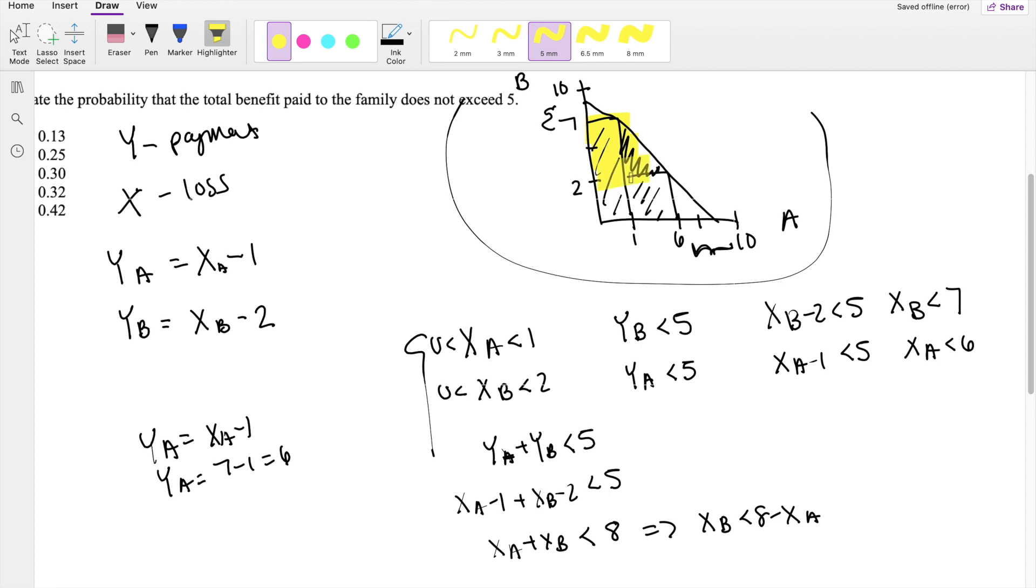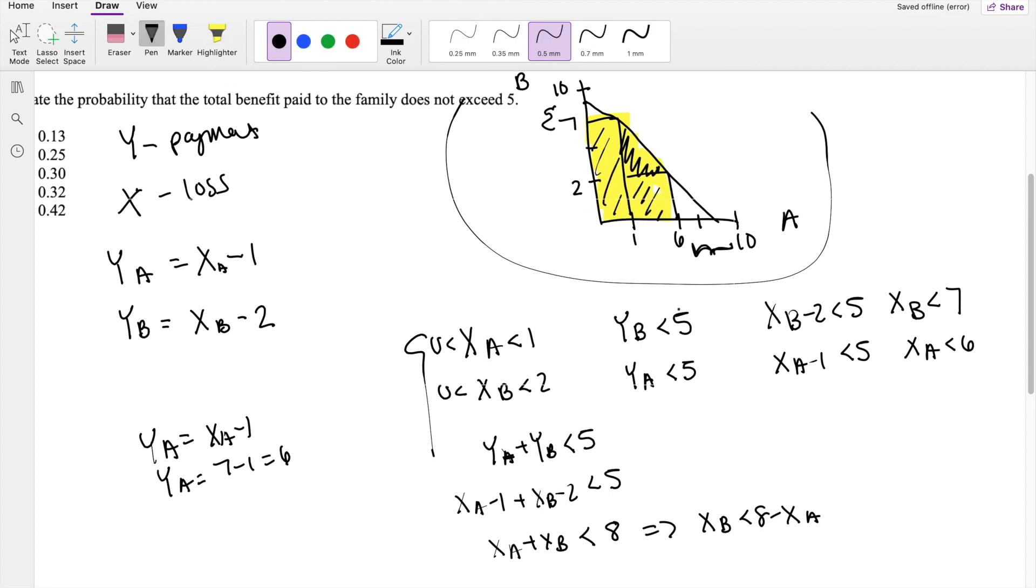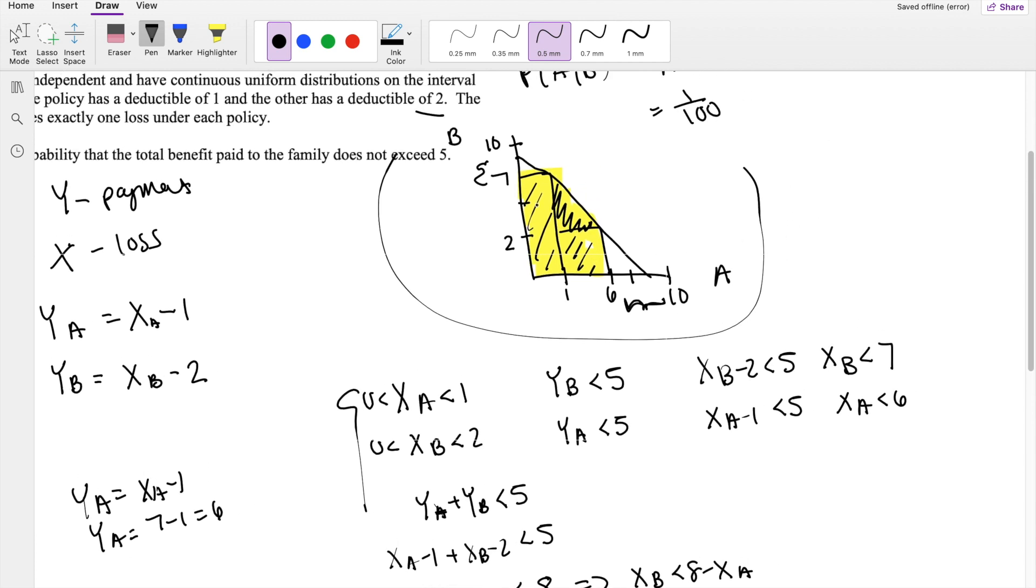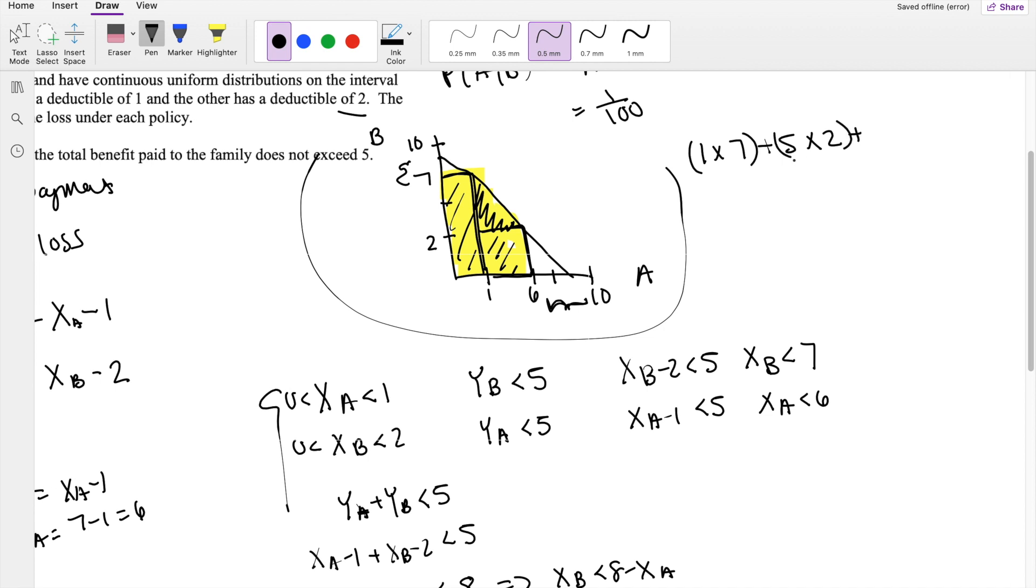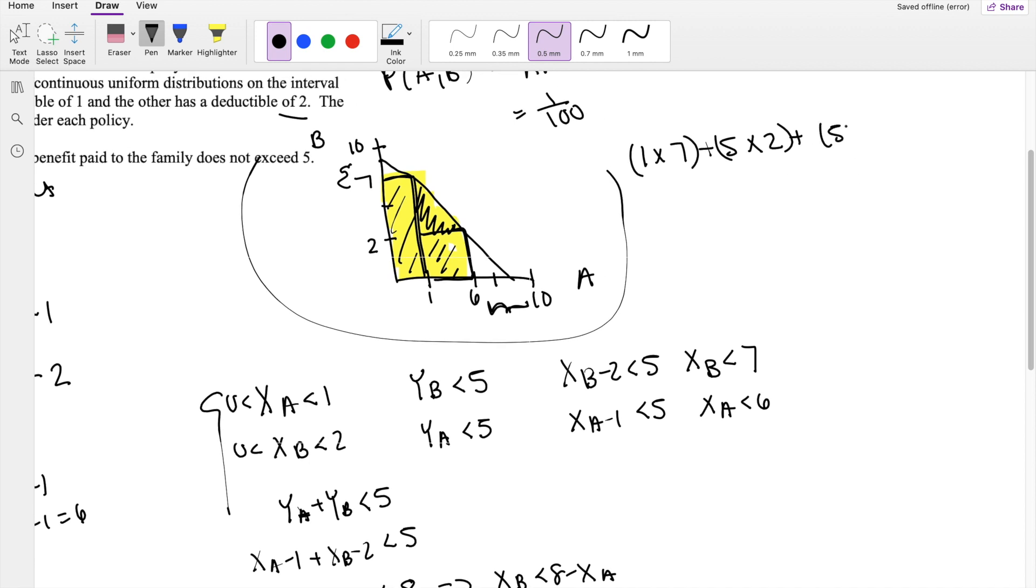So all we have to do is just figure out the area of this block. So then this big rectangle here is just going to be base 1, height 7. This square right here is going to be base 5, height 2. And lastly, this triangle right here is going to be base 5, height going from 2 to 7, so that's 5, divided